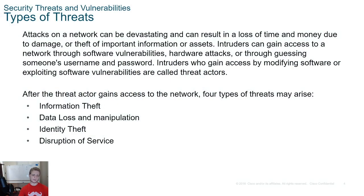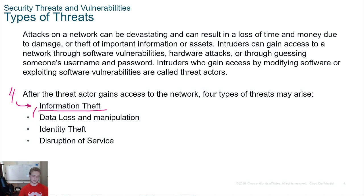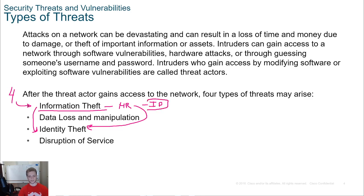We have four different types of threats that we're worried about. We have information theft, which is closely tied to identity theft. So maybe this could be your personal information — HR documents could have your social security number, your name, your birthday, all that stuff tied together, which can lead to identity theft. It may also be proprietary information, intellectual property — not internet protocol, but intellectual property. This can be very valuable. Companies like Intel or even Cisco need to protect their intellectual property.